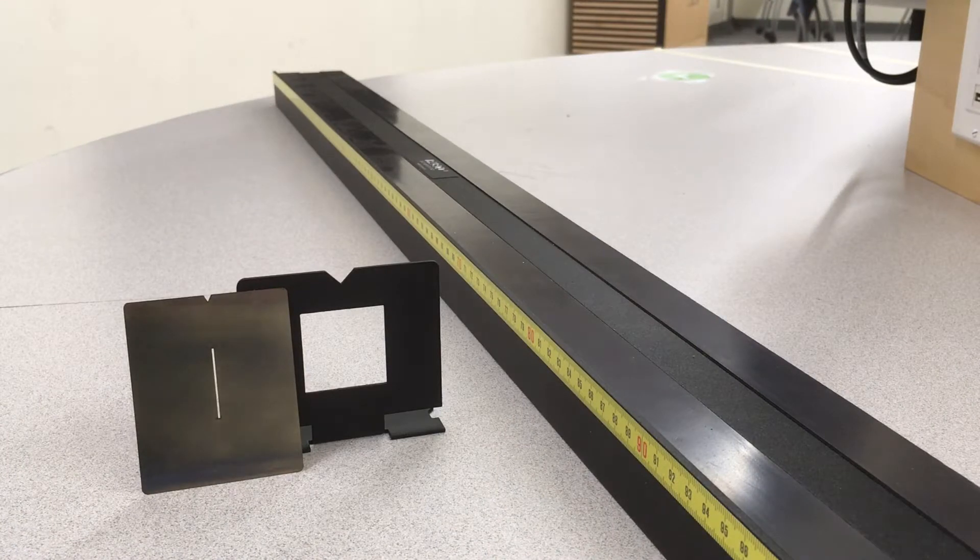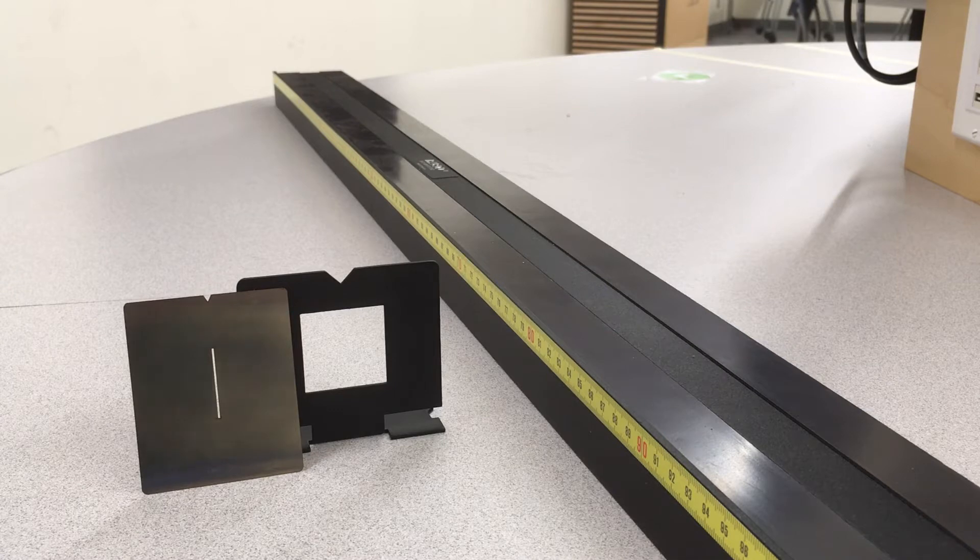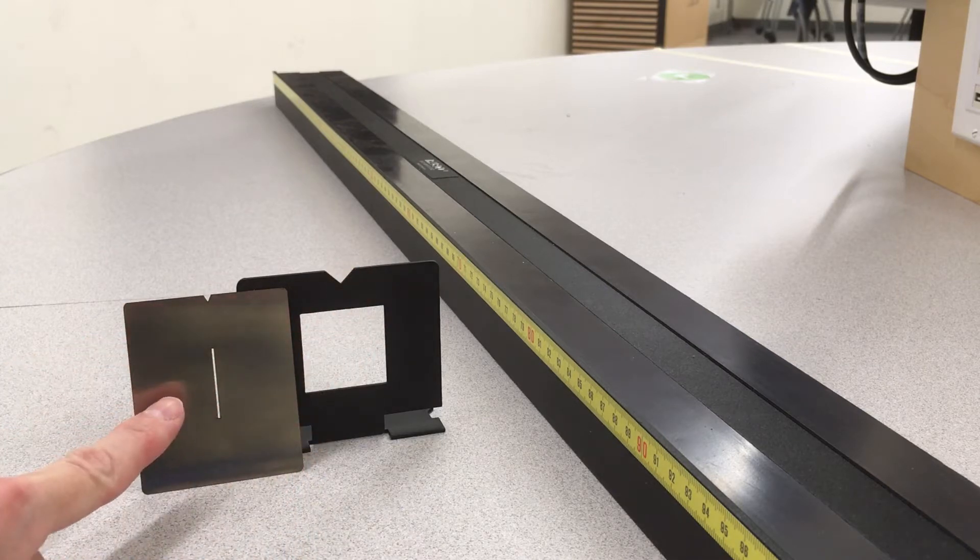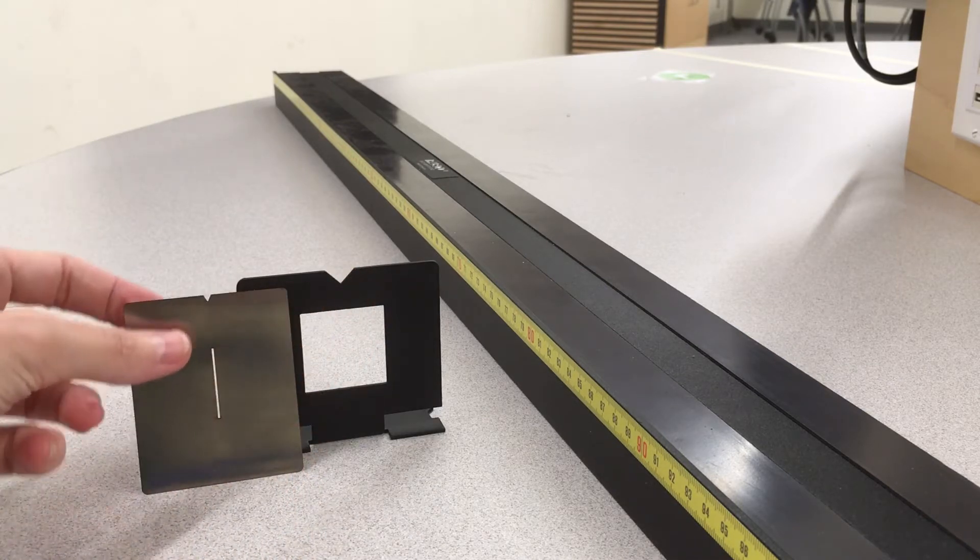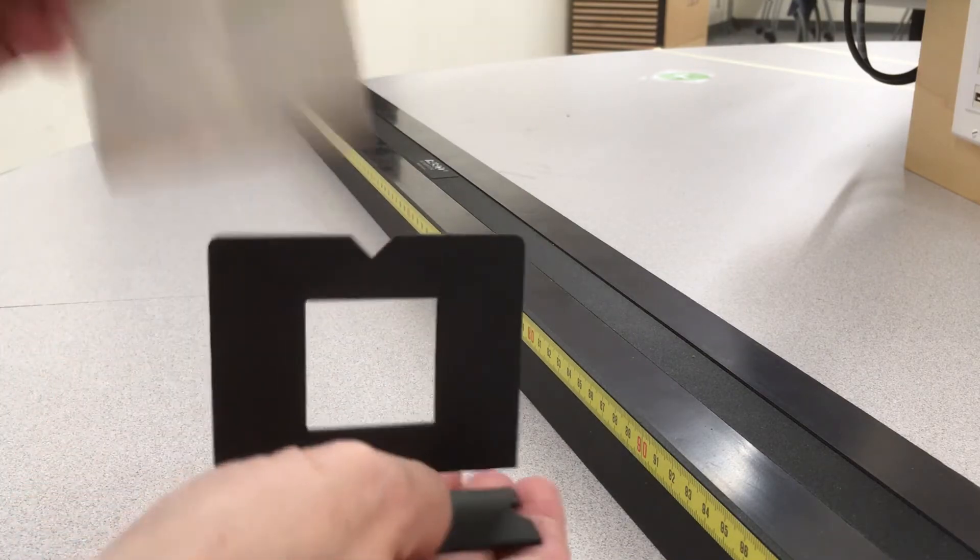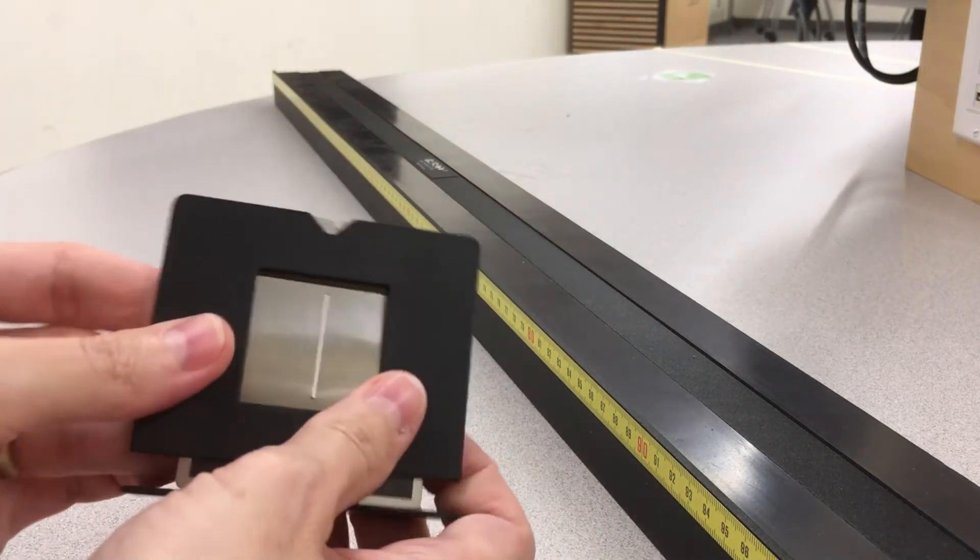Two features of this optics system help you align your components. First, note that the component holder and the components both have notches at the top. When you mount your components, you should align these notches.